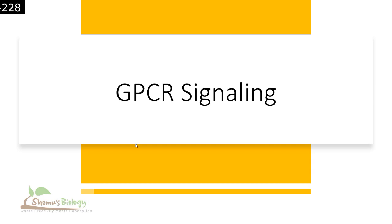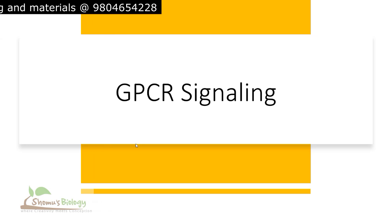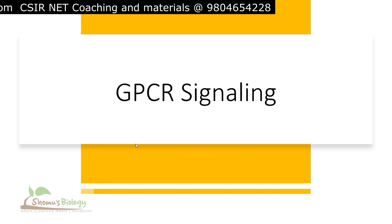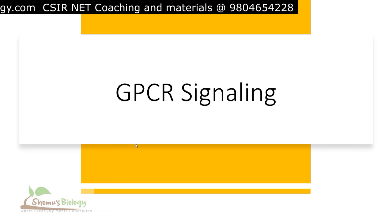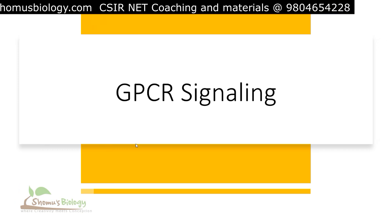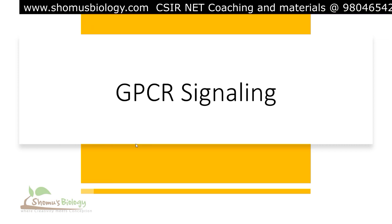In this cell signaling lecture we are going to talk about GPCR signaling, or G protein coupled receptor signaling pathway. GPCR signaling is huge because there are so many different signaling pathways linked to G protein coupled receptors. GPCRs are seven transmembrane receptors present on the surface of the cell, and upon binding of cell signaling molecules, various signaling cascades work in the cytosol and ultimately trigger the activation of transcription factors that allow the cell to grow, divide, and proliferate.